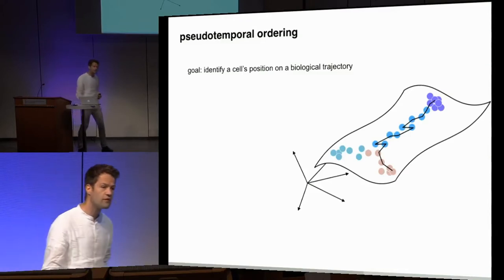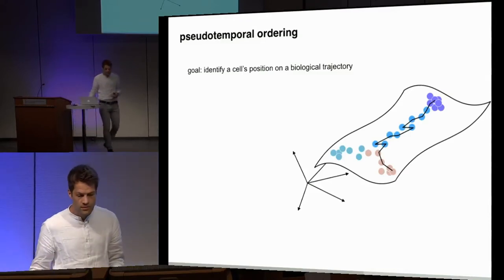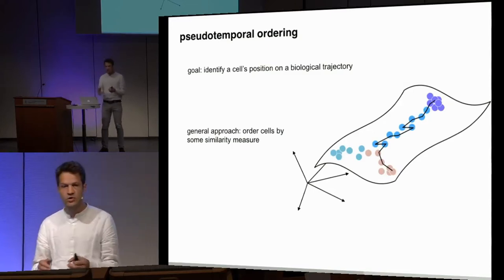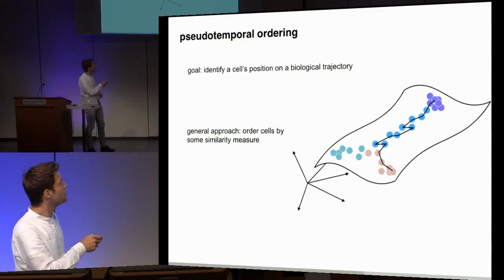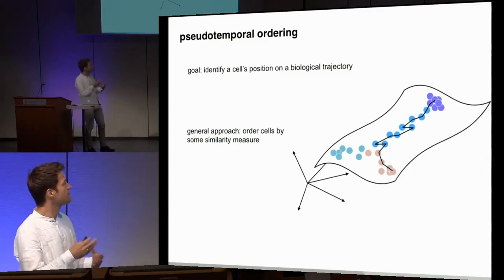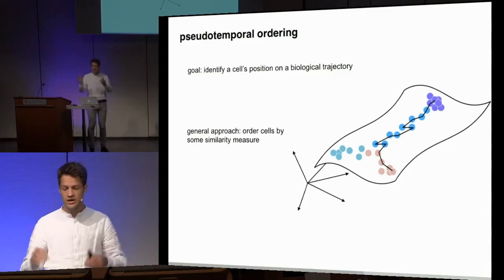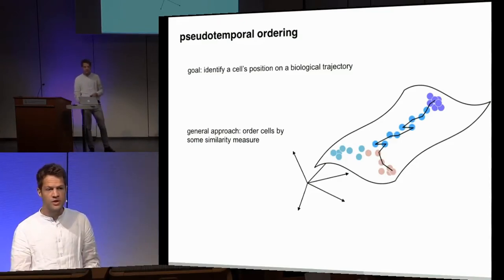Essentially we boil down the big question of learning these dynamics to some type of similarity measure. Essentially we want to start at some point — let's say we know that this should be some type of stem cell, a set of cells — and then we just want to determine some type of distance away from these things, and that's how we would initially start ordering. I tried to look into the literature and combine different aspects of various algorithms and briefly review these.